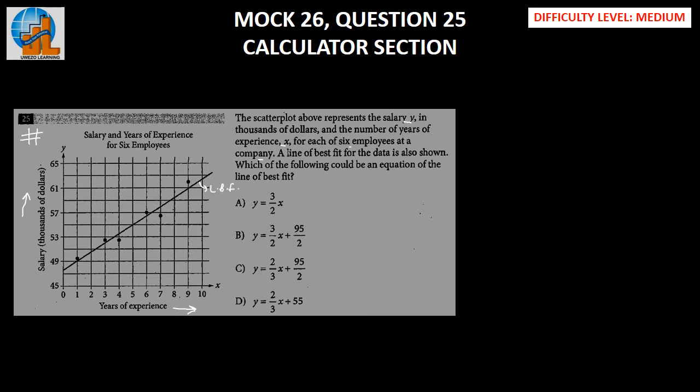In a scatter plot, these dots represent actual numbers and the predicted values are given by the line of best fit. We need to find out which of the following could be an equation of the line of best fit.